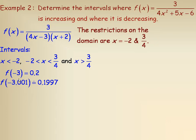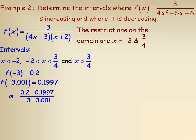Now I take another x value very close to −3: x = −3.001, and get y ≈ 0.1997. Finding the slope — change in y over change in x — we get (0.2 − 0.1997) / (−3 − (−3.001)), which equals approximately 0.3. So the slope is positive, meaning the function is increasing there, though not at a very large rate.